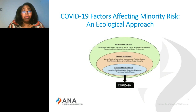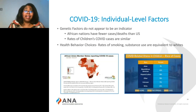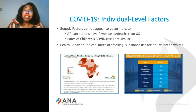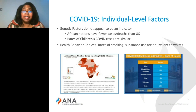Starting with individual factors, we recognize that genetic factors do not appear to be an indicator in the risk for contracting or dying from COVID-19. As an example, African nations have fewer cases and deaths than the U.S. Especially when we look at Senegal and Ghana — with their efforts at testing, contact tracing, treatment, and mitigation — these nations of 16 and 30 million residents have only had deaths under 100 during this time. So we recognize that genetics may not play a role in COVID-19.